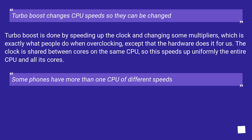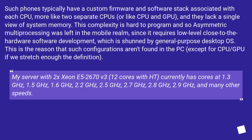Some phones have more than one CPU of different speeds. Such phones typically have a custom firmware and software stack associated with each CPU — more like two separate CPUs, more like a CPU and GPU — and they lack a single view of system memory. This complexity is hard to program, so asymmetric multiprocessing was left in the mobile realm, since it requires low-level, close-to-the-hardware software development which is shunned by general-purpose desktop use cases.